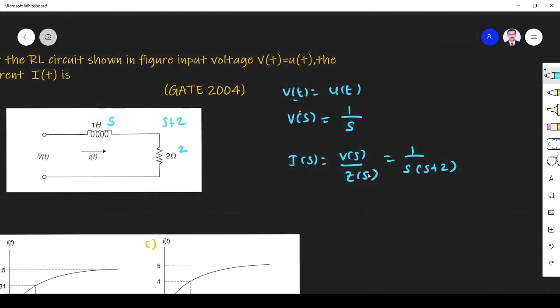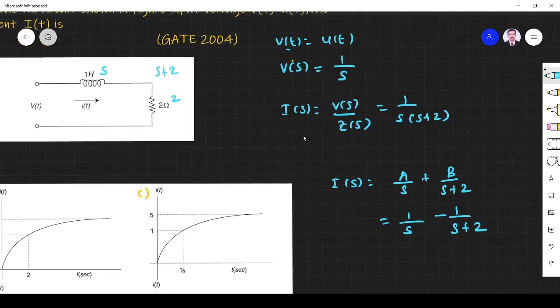So I take partial fraction expansion. So I(s) equals A/s plus B/(s+2). So if I simplify, what I get for A is 1, and what I get for B is minus 1, divided by s+2.